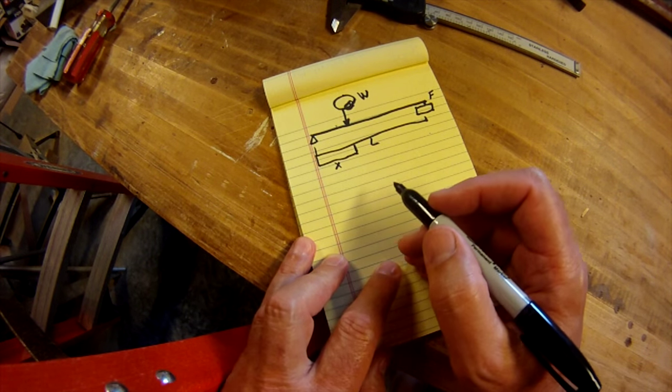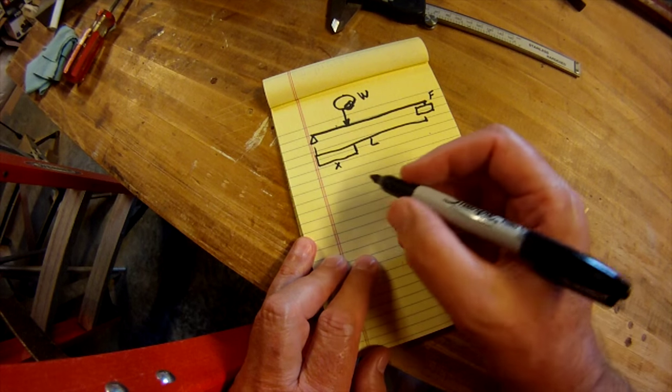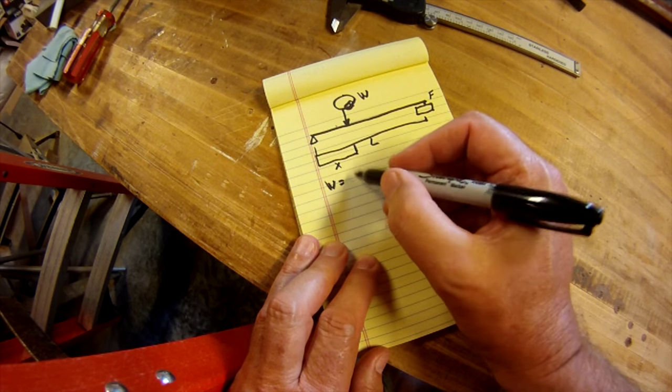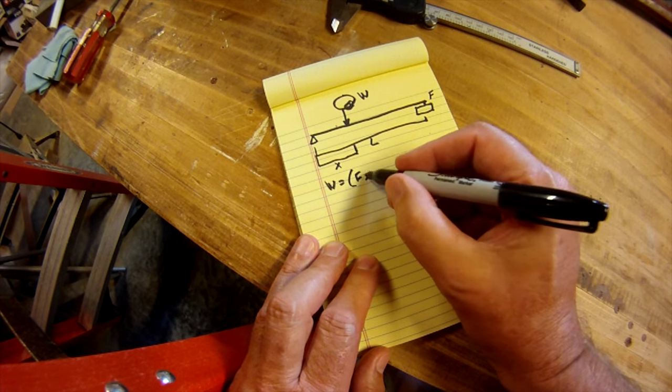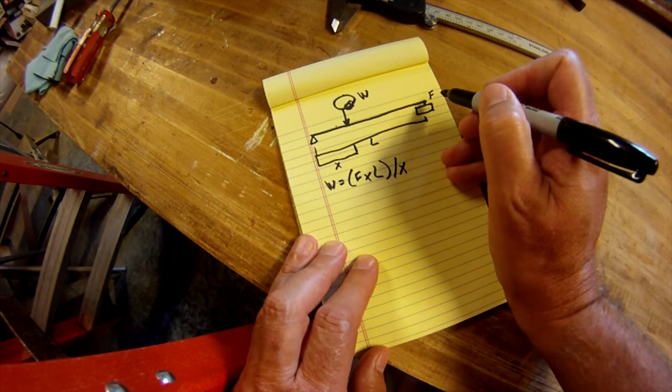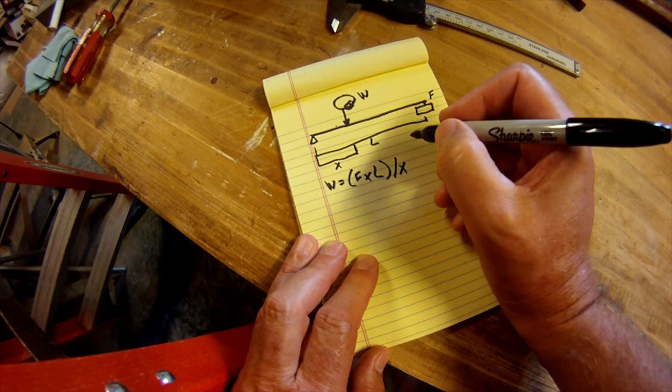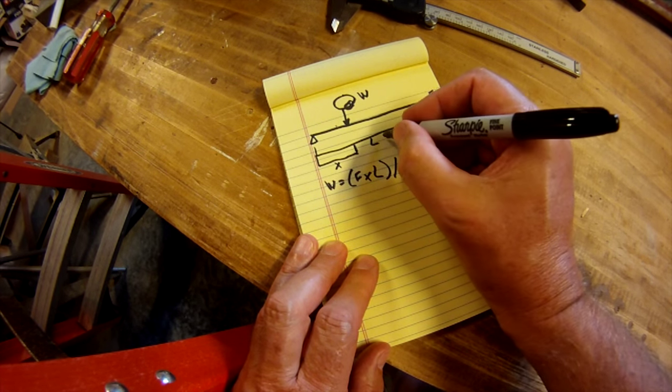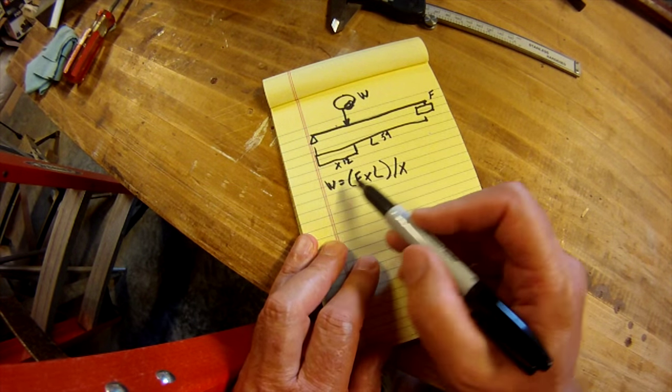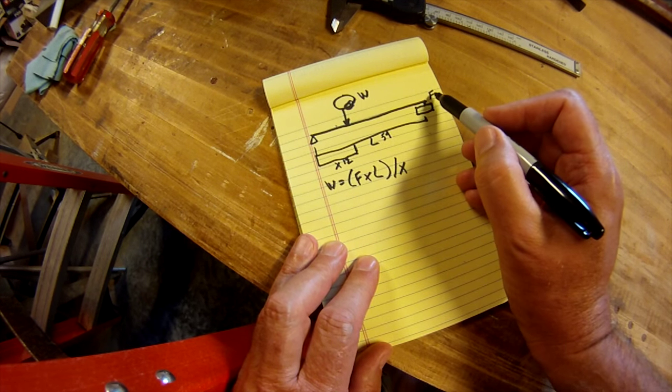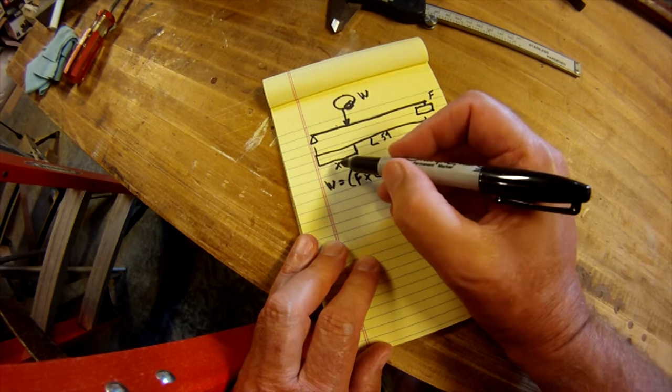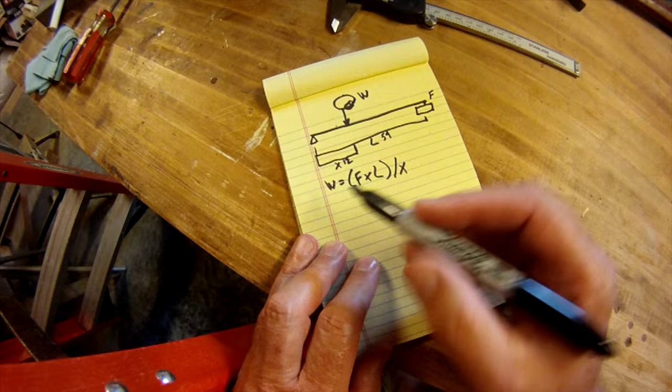This is what the formula looks like. So W, which is what we're trying to solve for, equals F times L divided by X. So F is the number that we read times L, and remember we know what that number is. So L is 59, and X was 12. So it's W equals F, the measurement off of here, times L, this total length, divided by X, which is the distance between the fulcrum and the load.